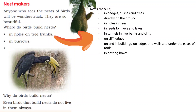Some birds nest directly on the ground. Some nest in and around water — in rivers, lakes, and over water. Some nest in holes in trees near rivers and lakes.